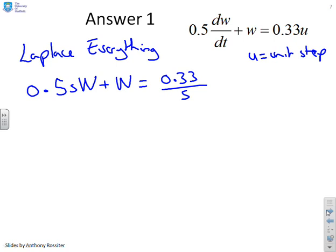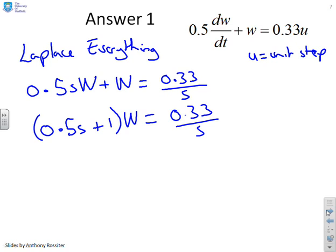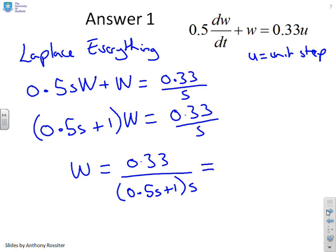Again, I can group common terms. So I get (0.5s + 1) into W equals 0.33/s. Or rearranging, W = 0.33/(0.5s + 1) into s. And again, if I want to make the denominator into monic form, I might rearrange this to write 0.66/(s+2) into s.